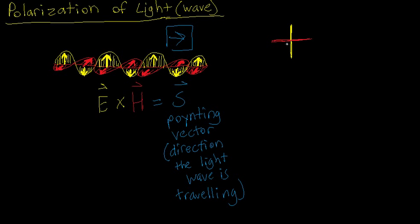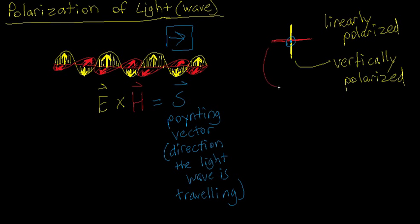The two different parts of the wave, the electric and magnetic field, trace out lines. Because of this, both of those fields are called linearly polarized. More specifically, the electric field here would be called vertically polarized, because it is oscillating up and down. And the magnetic field would be called horizontally polarized, because it is oscillating to the left and right.